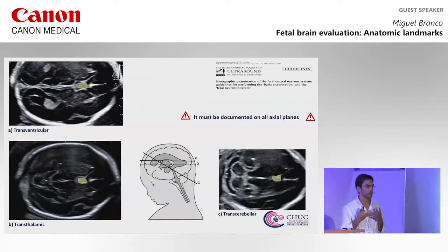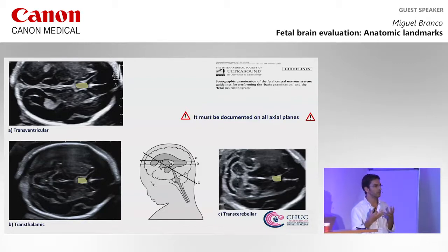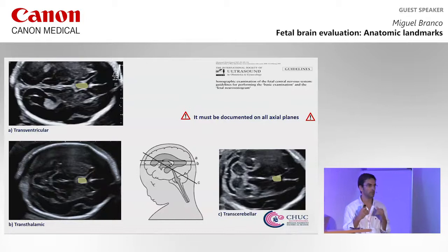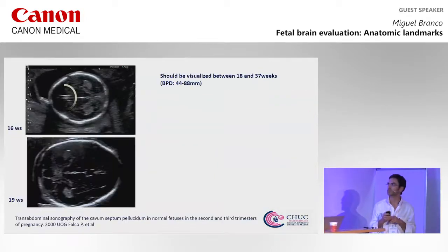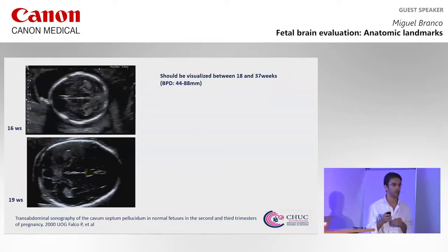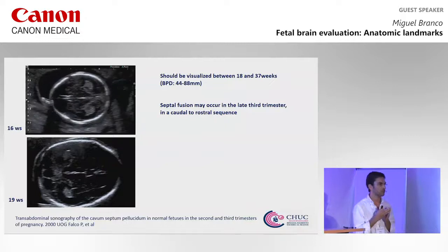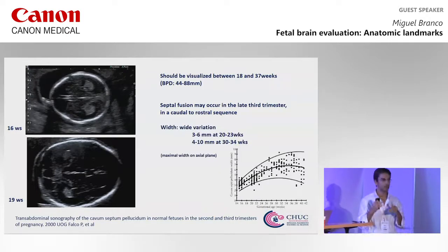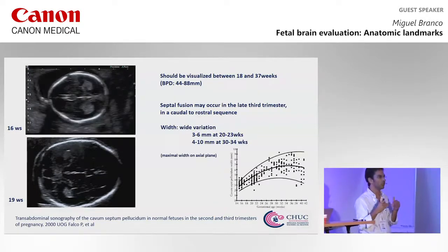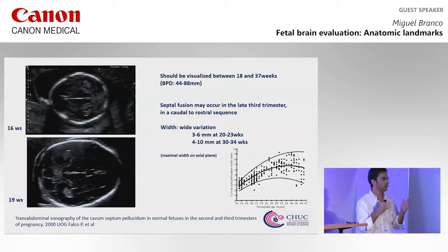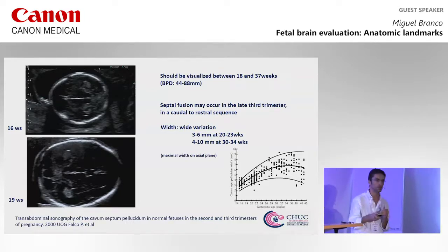The CSP is an important landmark on screening, and it's very important that we make all images including the CSP. The screening axial image must include the CSP. The CSP is visible between 18 and 37 weeks. Later in gestation it can fuse — it is almost always fused after three months of birth. There is wide variation in width, but we can take about six millimeters as the upper limit on the morphologic scan at 20 to 23 weeks.